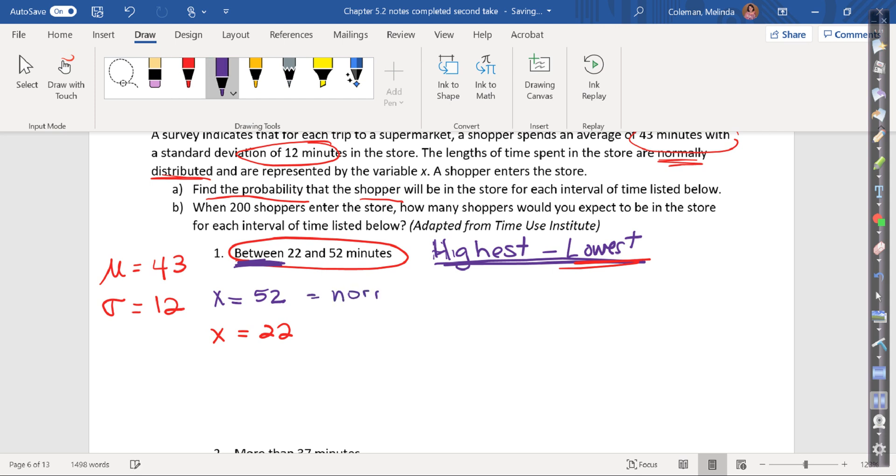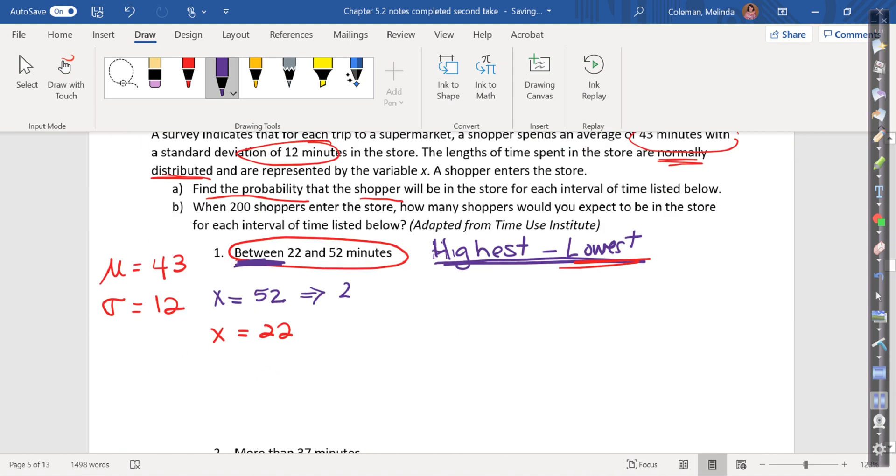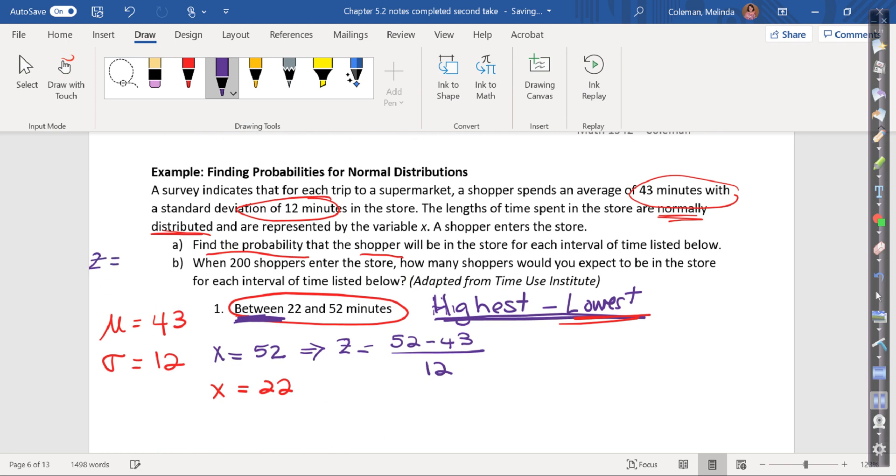For the highest, we're going to type in our calculator normalcdf - but wait, we have to have z-scores first. Sorry. So first thing we have to do is convert this to a z. So z equals the x value that we're looking for, 52 minus 43 divided by 12. Again, that formula is z equals x minus mu divided by standard deviation. So my z-score in this case equals 0.75. So now on my calculator, I'll do normalcdf, negative 10,000, 0.75, 0 comma 1.